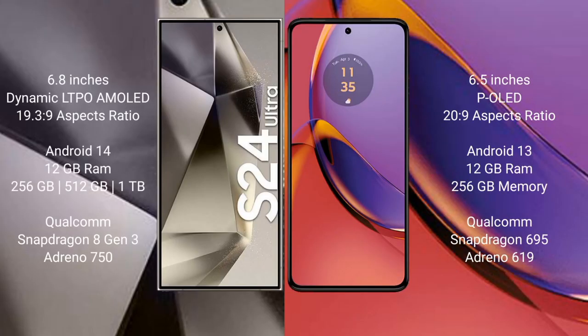Samsung Galaxy S24 Ultra comes with a 6.8-inch Dynamic LTPO AMOLED display and aspect ratio 19.3:9. Motorola Moto G84 comes with a 6.5-inch P-OLED display and aspect ratio 20:9.